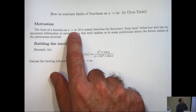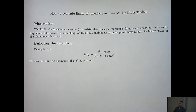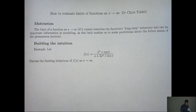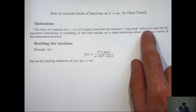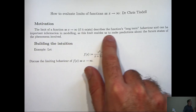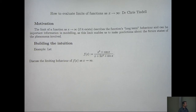Well, the limit of a function as x gets large and positive, if the limit exists, can describe the function's long-term behaviour or the long-term trend of the function. Geometrically, if this limit exists, the function will have a horizontal asymptote represented by the limit value. We're interested in this long-term behaviour because it can be important in modelling — this limit as x approaches infinity can enable us to make predictions about future states of the phenomena involved. For example, the function might represent the size of a population and x might represent time, and we want to know if the population tends to some equilibrium limit in the long run.